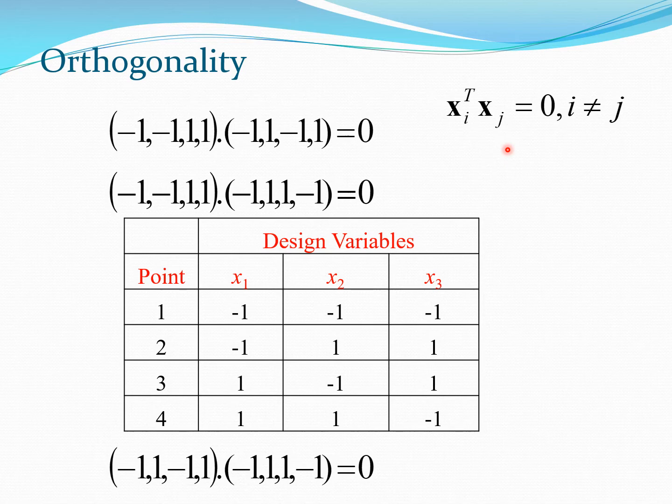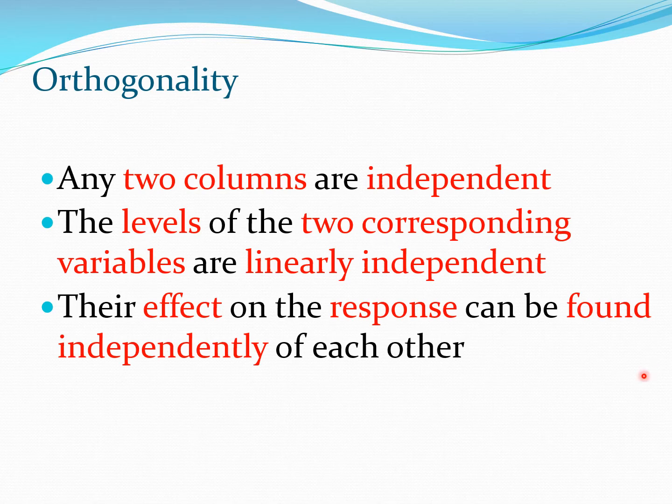And this is a factor which is particularly beneficial as far as the construction of the OA is concerned. Now we see that these two columns are independent. The levels of the two corresponding variables are also linearly independent, and their effect on the response can be found independently. So these are some of the characteristics which come out from the particular feature which these columns possess.